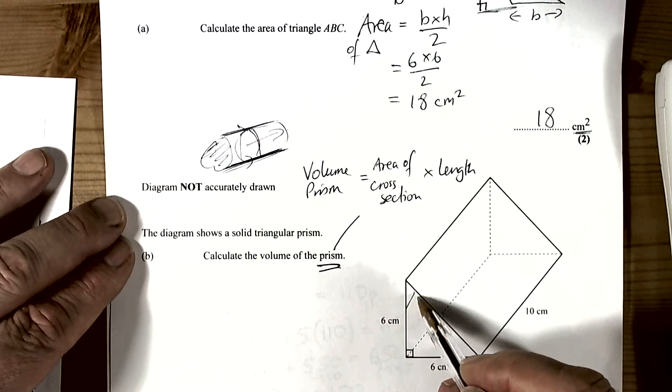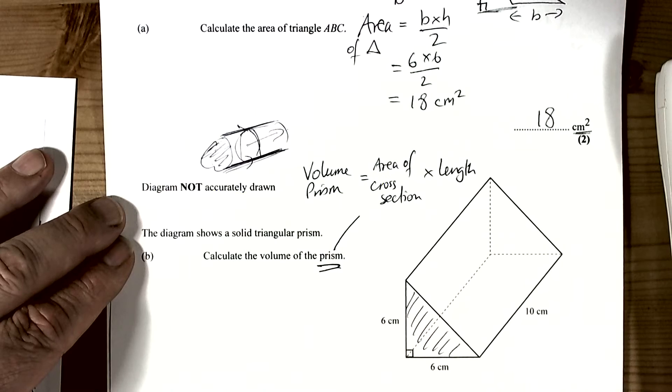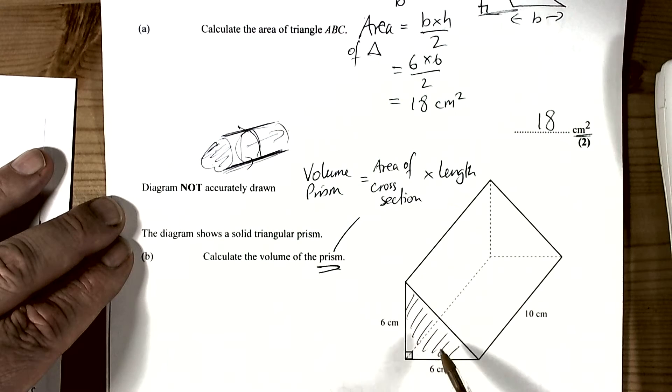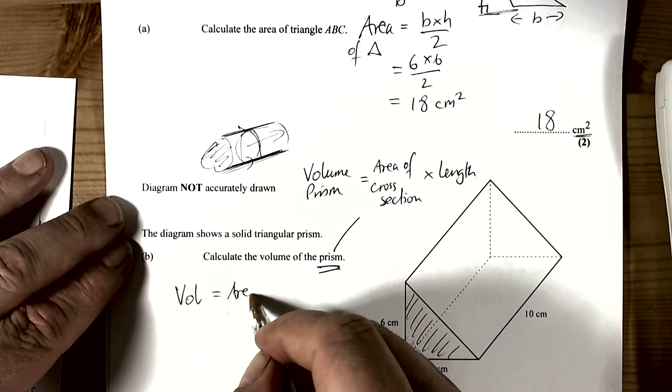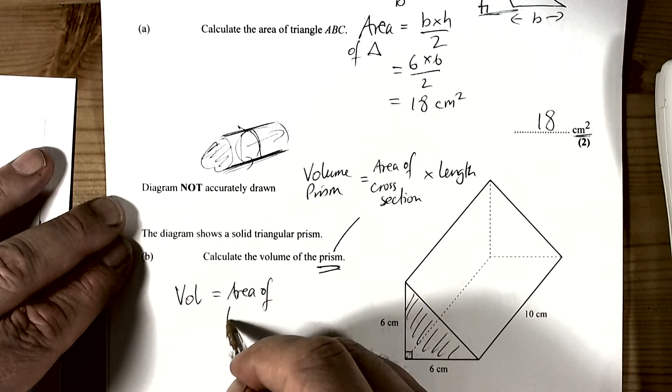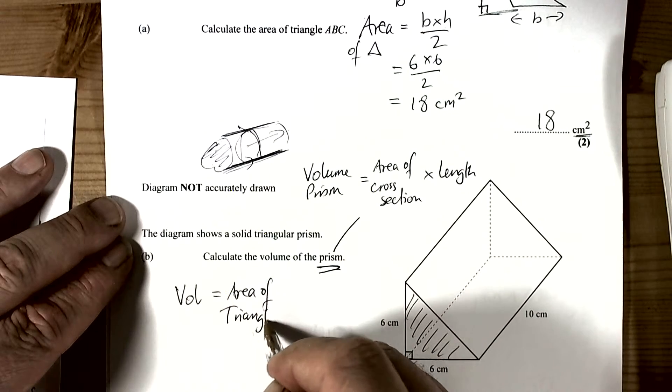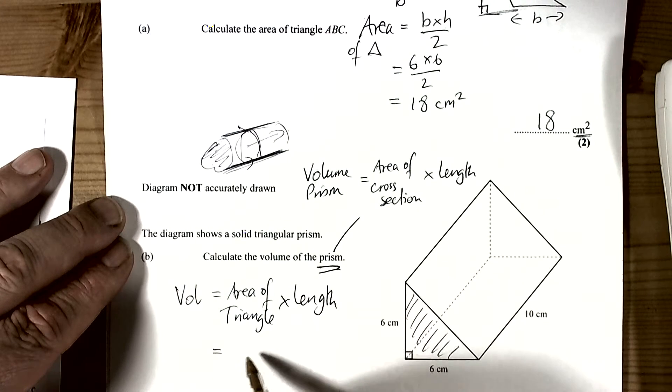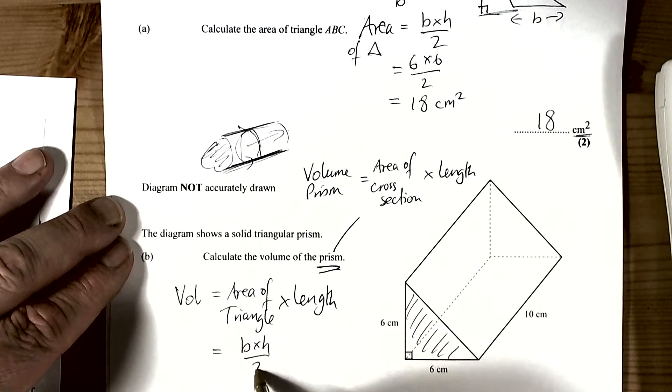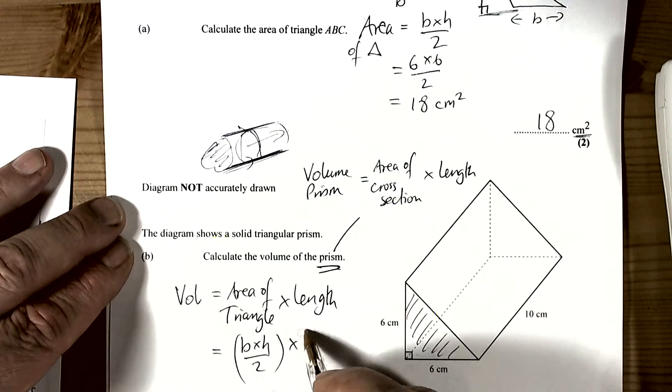So this prism has a cross section of a triangle, and they gave you a hint by the fact that the first part of the question asked you to work out the area of this triangle. So the volume of this prism is the area of triangle times the length. It's going to be base times height divided by 2 for the triangle, times the length.